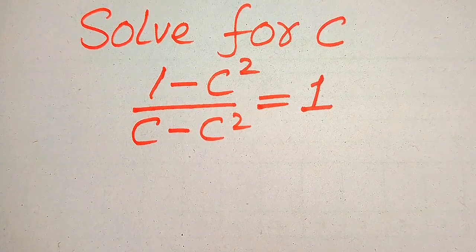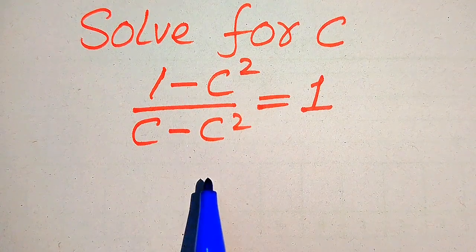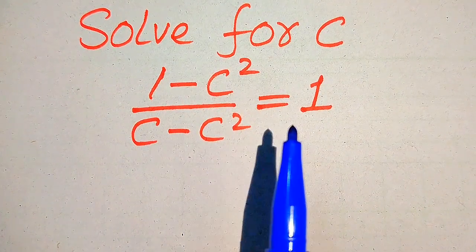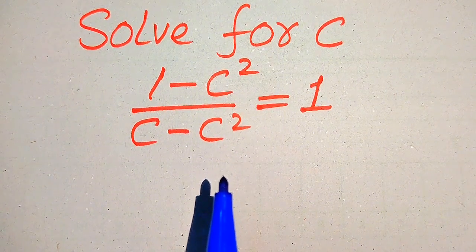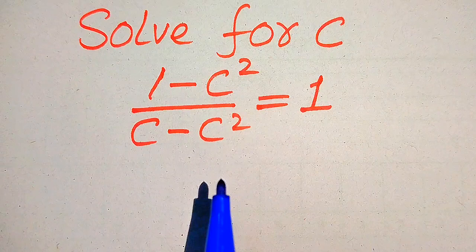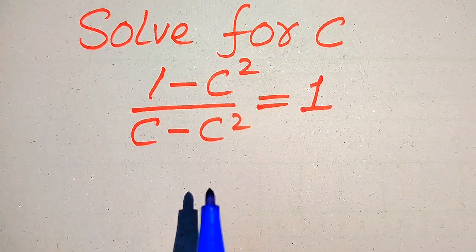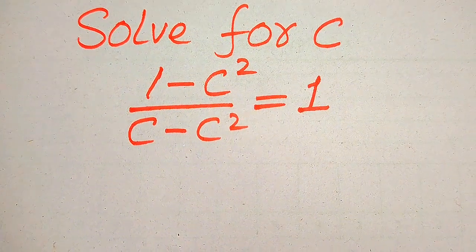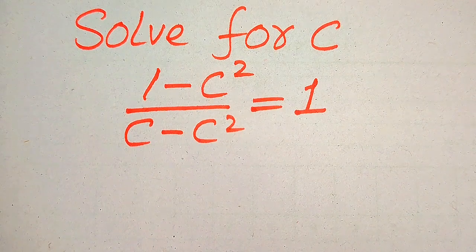Hello everyone. How to solve this problem for the values of C if we have 1 minus C square divided by C minus C square is equals to 1. We solve this problem for all the values of C. Here first we find all the roots of this equation, and at the last we will verify which of the roots are solutions of the given equation and which of the roots are extraneous roots. At the end I will explain the difference between solution and extraneous root, so please watch this video to the end.